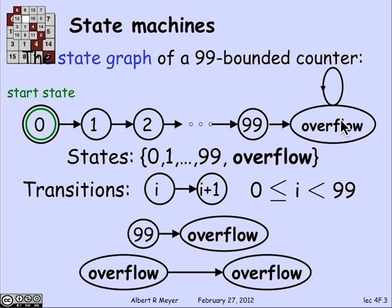The picture at the top says exactly the same thing as the mathematical notation, explicitly describing what the transitions are. This machine, if you really built it, wouldn't be much use, because once it's overflowed, it's dead — it stays there. A real machine to be useful would have a reset transition which took overflow back to 0. But this illustrates the basic idea.